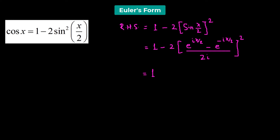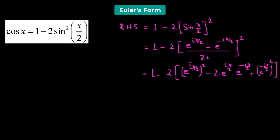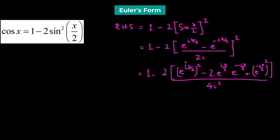Now let's square it. We expand to get e^(ix/2) squared, minus 2 times e^(ix/2) times e^(-ix/2), plus e^(-ix/2) squared, all divided by (2i) squared, which gives 4i squared. Since i squared equals negative 1, we have 1 minus 2 over 4 times the expanded expression.